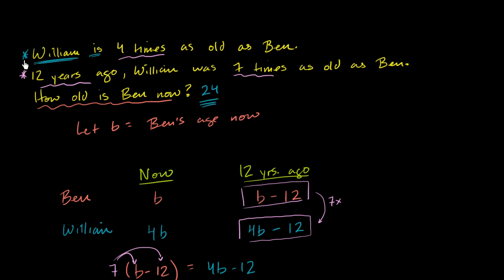Well, four times twenty-four is ninety-six. So William is a senior. We should call him Mr. William. So he is ninety-six years old. Maybe he's Ben's grandfather or great grandfather.